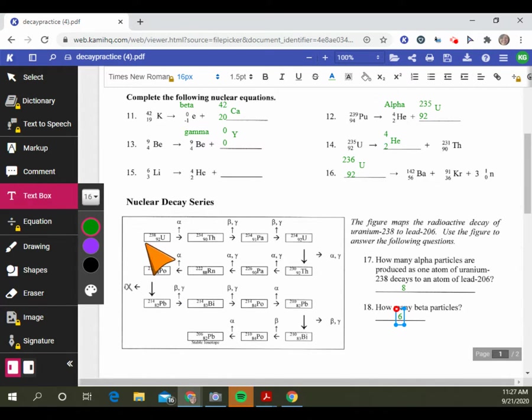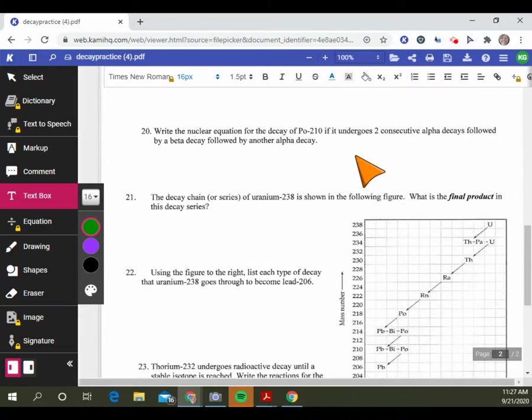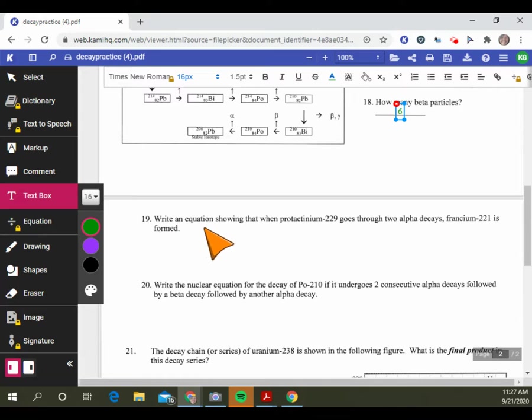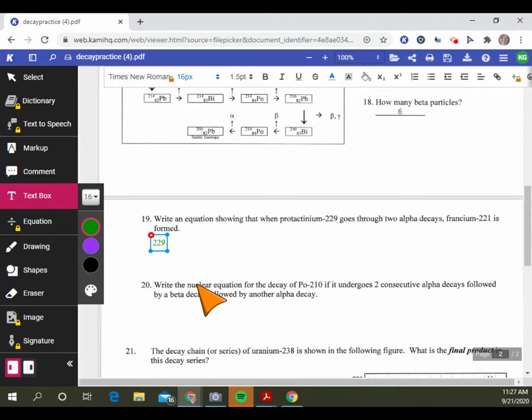That one's simple to look at, but at some point you're going to have to do the series. Uranium-238 undergoes alpha decay, beta decay, gamma, and you would have to figure out going through each of the steps just like you did in this section of the worksheet. Let's go through 19 together and then I'll let you finish.